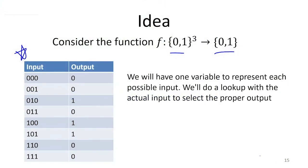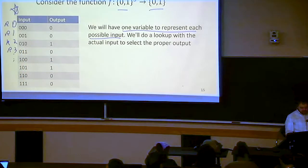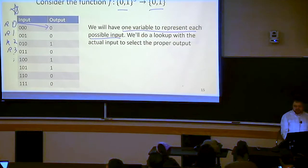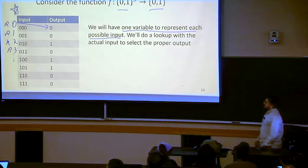So the idea for how we're going to implement this function, no matter what it is, is we're going to show that in our straight line program, we can sort of have one variable to represent every single possible input. So we're basically just going to, in our program, have a variable that's like row zero, and then a variable that's row one, then a variable that's row two, and then a variable that's row three, and so on. So we're going to have a variable for every single row in this table, and the value of that variable is going to be, if we had that row's input, the value is going to be the output for that row.